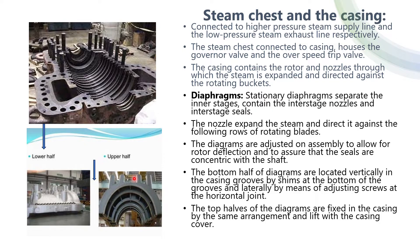The diaphragms are adjusted on the assembly to allow for the rotor deflection and to ensure that the seals are concentric with the shaft. The bottom half of the diaphragms are located vertically in the casing groove by the seams at the bottom of the groove and laterally by means of adjusting a screw at the horizontal joint. The top half of the diaphragms are fixed in the casing by the same arrangement and lift along with the casing cover.